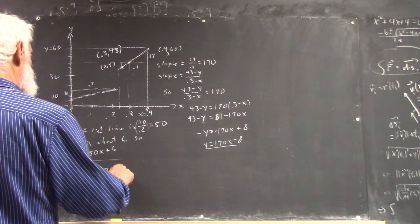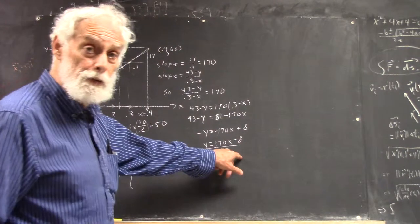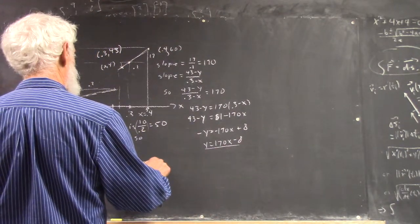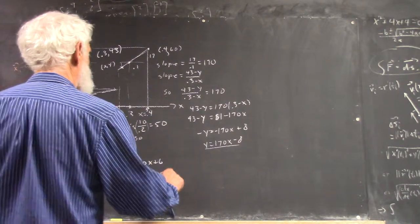It's f of x equals... Now it's got two different equations. It's got this equation and this equation. So sometimes it equals 50x plus 6 and sometimes it equals 170x minus 8.